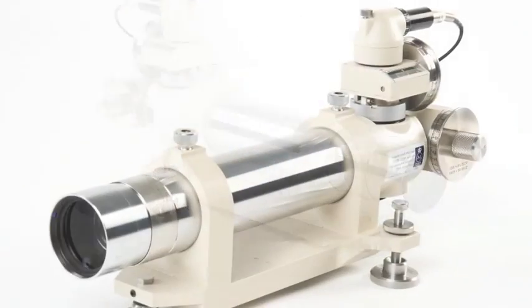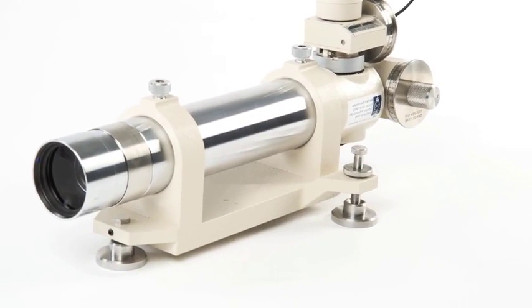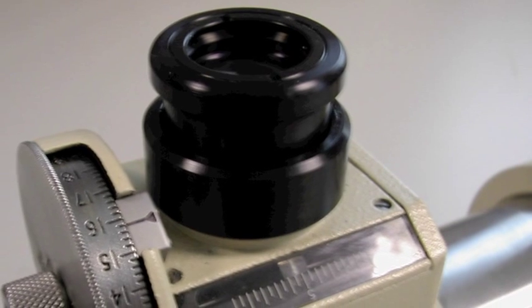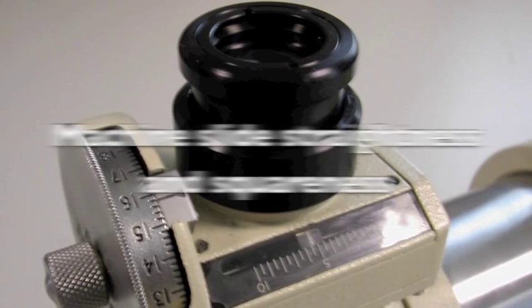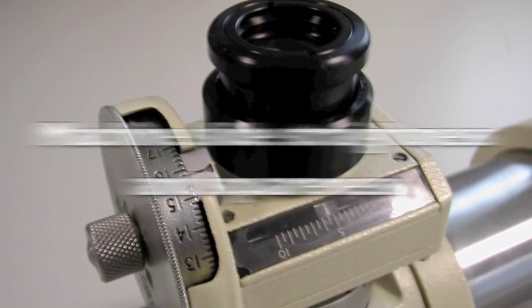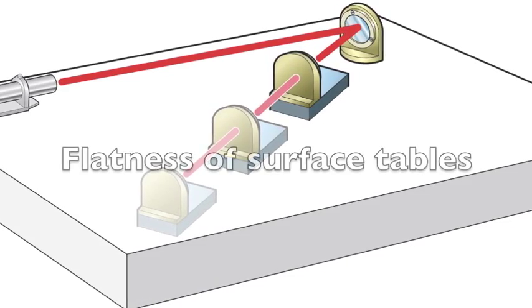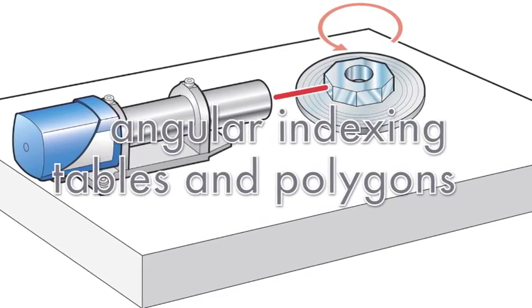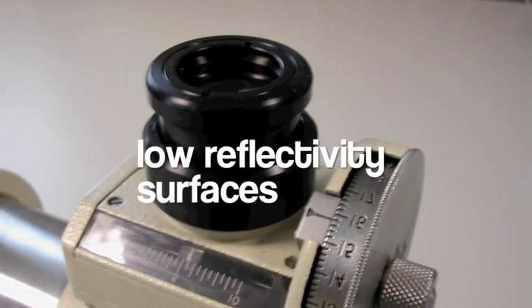And finally in the visual range we have the high accuracy dual axis TA51. Ideal for checking machine slides for straightness and squareness, for checking flatness of surface tables, checking angular indexing tables and polygons, and for low reflectivity surfaces.